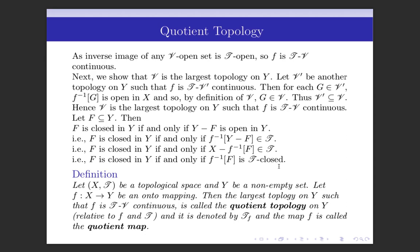Now we shall define the quotient topology. Let X, T be a topological space and Y be a non-empty set. Let F be an onto mapping from X to Y. Then the largest topology on Y such that F is T-V continuous is called the quotient topology on Y related to F and T, and it is denoted by T_F. The map F is called the quotient map. From the theorem we just proved, V is the quotient topology on Y and F is the quotient map.